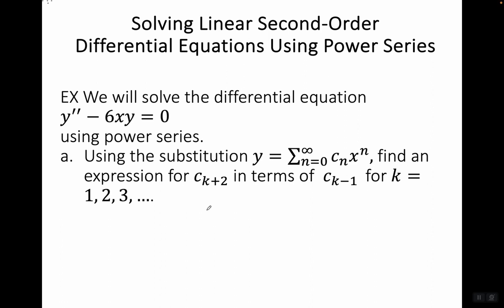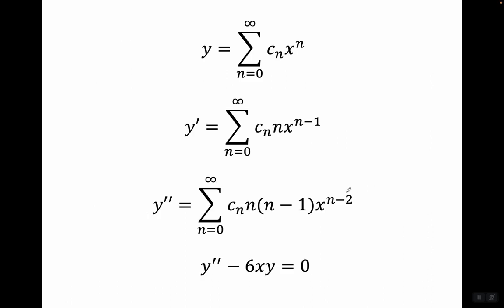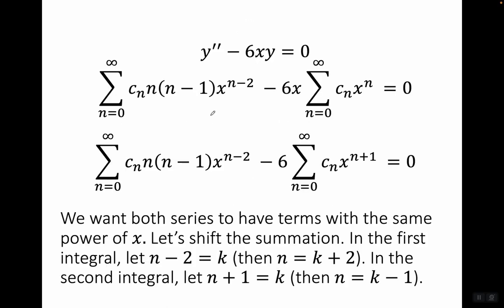You're wondering how on earth we're going to find that expression, but it will work out fine. We said this is y. Taking the derivative of both sides gives y prime equals the sum of n times c sub n times x to the n minus one. Taking the derivative again gives y double prime equals the sum of n times n minus one times c sub n times x to the n minus two. We plug all of this into y double prime minus six x y equals zero. So this is our y double prime, here's our six x, and here's our y.